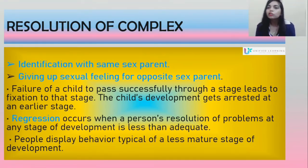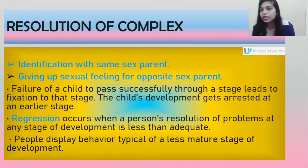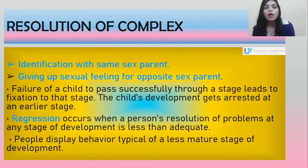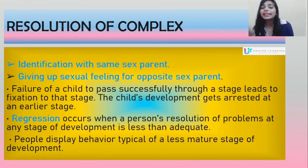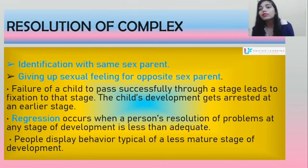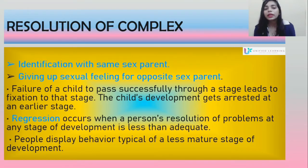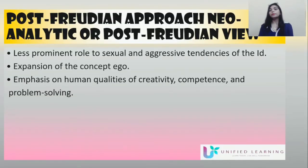To resolve these complexes, two methods are used: first, identification with the same-sex parent; second, giving up sexual feelings for the opposite-sex parent. Regression occurs when a person's resolution of problems at any stage of development is less than adequate. When they cannot make a reasonable resolution, people display behavior typical of a less mature stage of development.